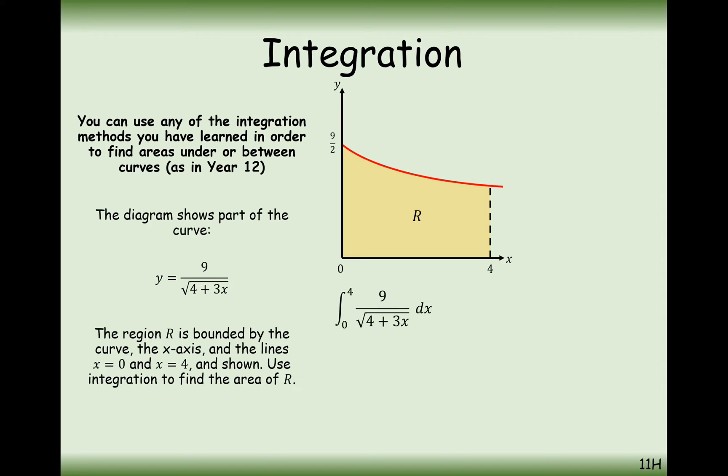So we all know how to do this. All we need to do is put the function inside an integral between the boundaries of 4 down to 0. So upper boundary 4 goes on the top, 0 goes on the bottom, and then after we've integrated we substitute in 4 and then subtract 0 substituted in. So let's go ahead and get started with this integral.